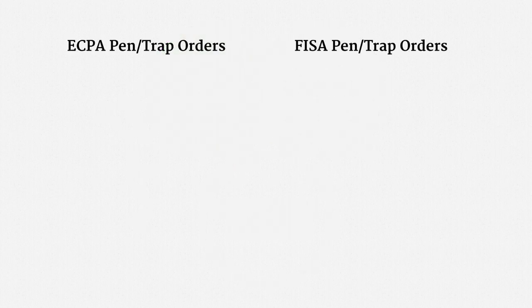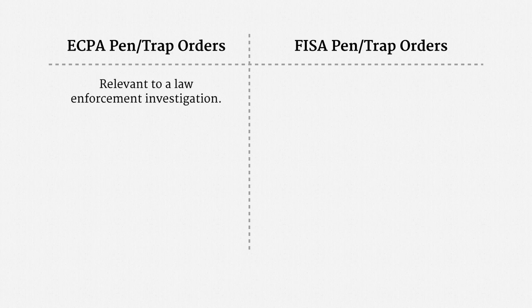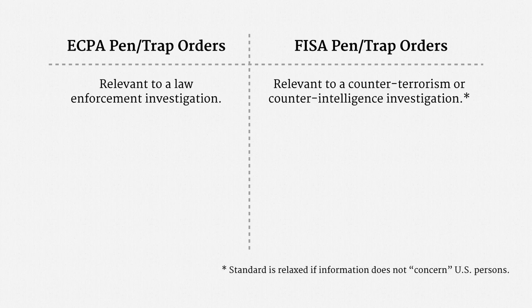I'd like to highlight four key differences between ECPA pen trap orders and FISA pen trap orders. On the ECPA side, the information obtained from a pen trap order has to be likely relevant to a law enforcement investigation. On the FISA side, that information has to be relevant to a counter-terrorism or counter-intelligence investigation. That standard does get relaxed, though, if no US persons are involved.